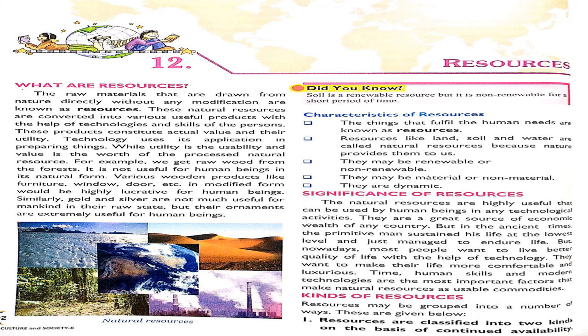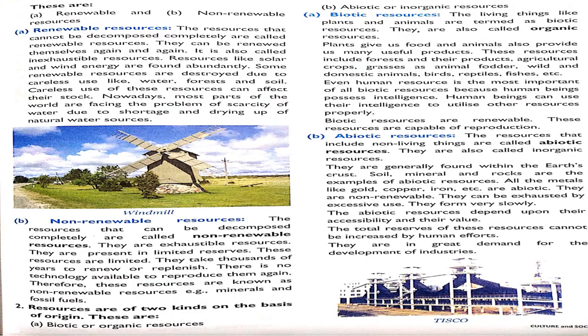Resources are divided into two kinds on the basis of continued availability. First, we have renewable and non-renewable resources. Renewable resources are those that can be renewed and reused — like plastic, which can be melted and given a new shape, and iron (loha) which is also renewable as we can reshape it. Non-renewable resources cannot be found again once used — like petrol.